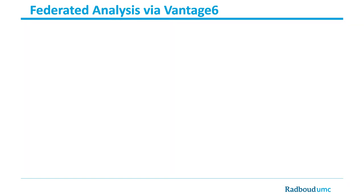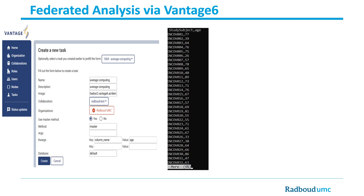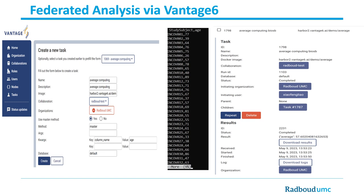On this slide, we show how we use Vantage 6 to help a researcher perform federated analysis. The left screenshot shows the Vantage 6 user interface where a registered user can create a task. A Docker container is specified and will be retrieved from a Docker registry like Docker Hub. An average algorithm is specified to run on the TWARC dataset. For simplicity, we use a CSV file as a dataset which has a column named 'age'. The average algorithm computes an average value on the age column, which is also specified as a parameter of the task. The screenshot on the right shows the result of running the algorithm.